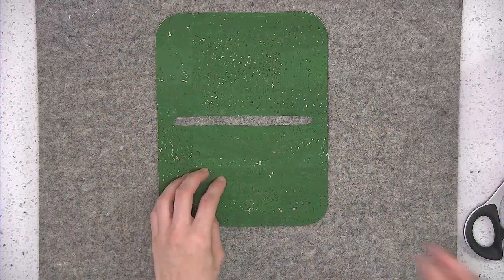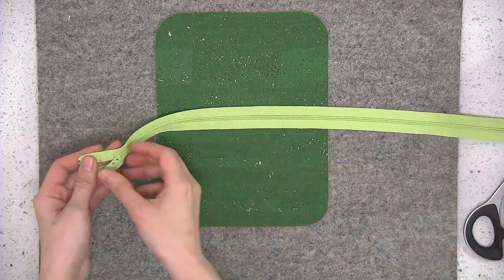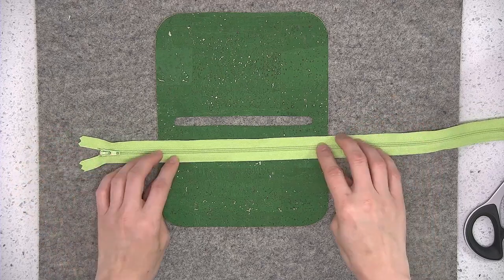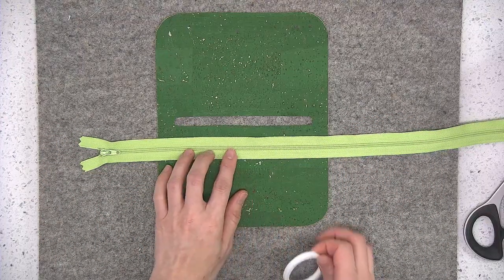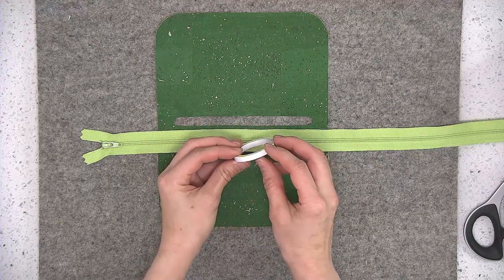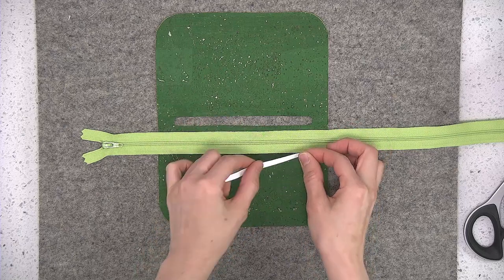Now it's time to insert the zipper. I only had a really long zipper in my stash, and that's okay because we'll be trimming it down. I'm going to use Dritz Wash-Away Wonder Tape to install that zipper. This is a quarter of an inch wide tape and it's double-sided, which makes it really handy for inserting a zipper.